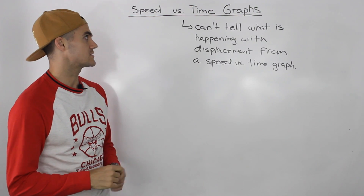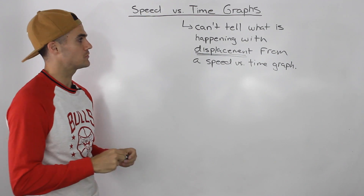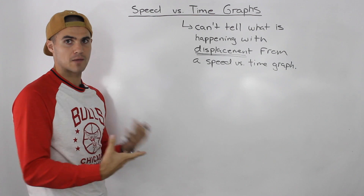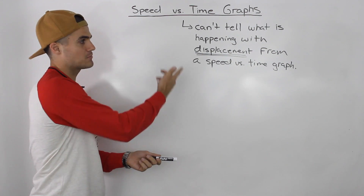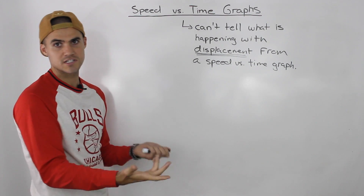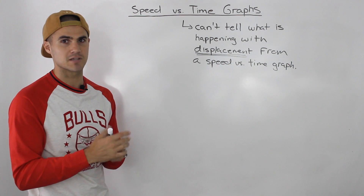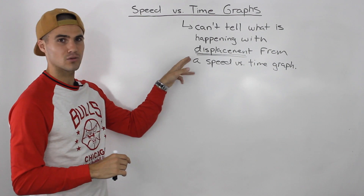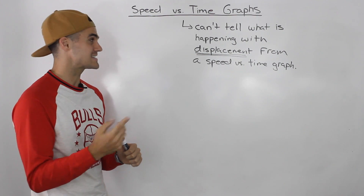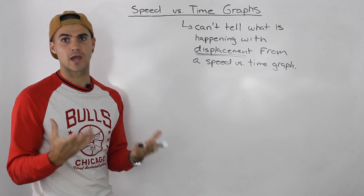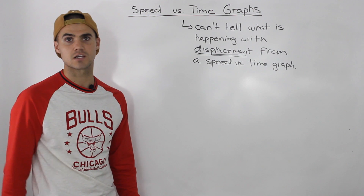The first thing I want to point out before we get into the graphs is that you can't tell what is happening with displacement from a speed versus time graph. When we did displacement versus time graphs we could tell what was happening with the speed, but we can't go backwards. Speed can be increasing while an object is either increasing or decreasing displacement. So when we go over these scenarios, I'm not going to mention anything about displacement. You can only tell whether the speed is increasing or decreasing, and whether the rate of change of speed is increasing, decreasing, or constant.